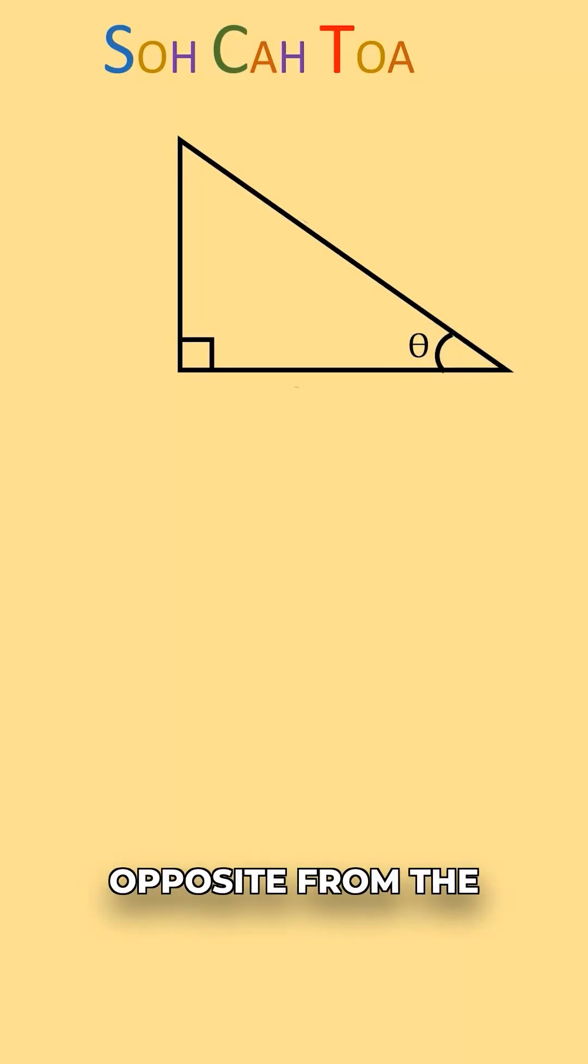The side that is opposite from the right angle, or if we draw a line from our right angle out like this, we call the hypotenuse. It's the longest of the three sides.